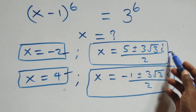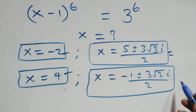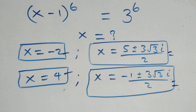Therefore, altogether we have six solutions to this problem: two real solutions (x equals minus 2 and x equals 4), two complex solutions from Case 1, and two complex solutions from Case 2. Thank you for watching. Don't forget to subscribe for more videos, turn on your notification bell, share this video, give a thumbs up, and put your comments. See you in the next video, bye for now.